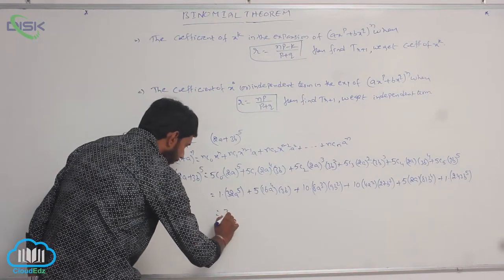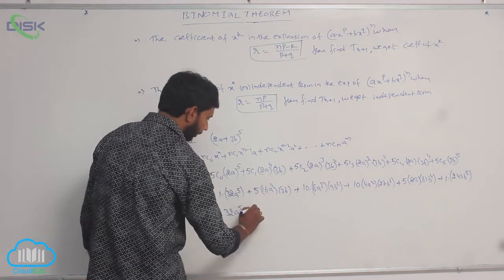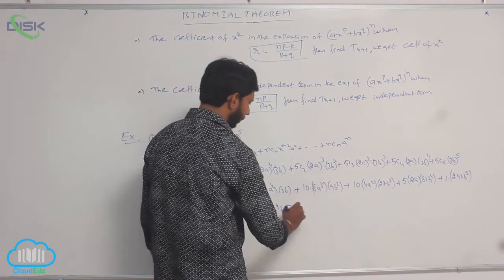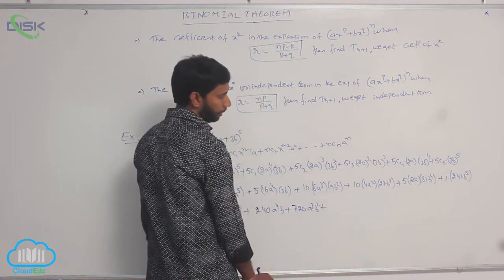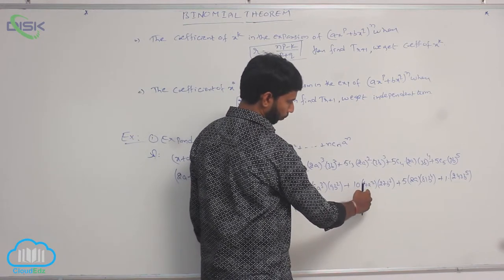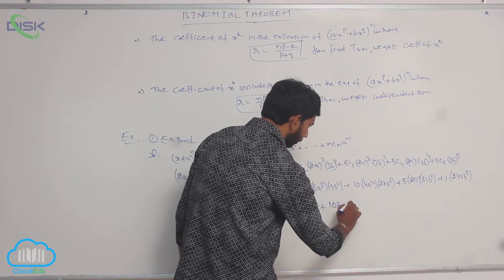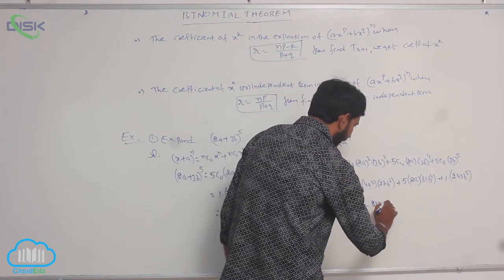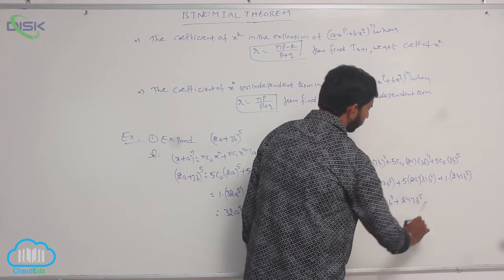Simplifying: 32a^5 + 240a^4·b + 720a^3·b^2 + 1080a^2·b^3 + 810a·b^4 + 243b^5.